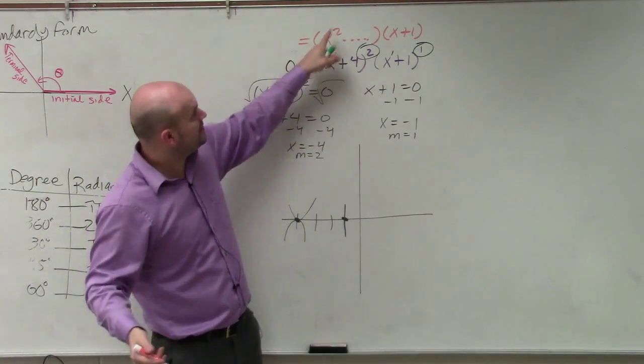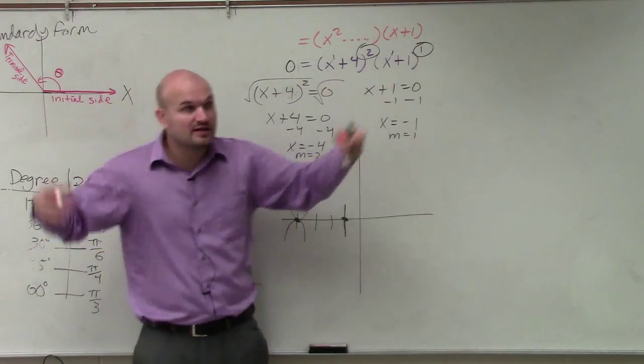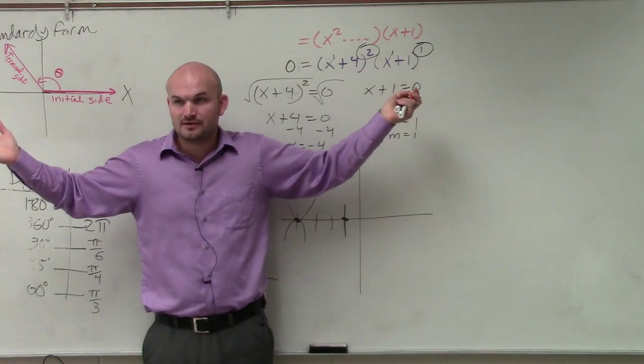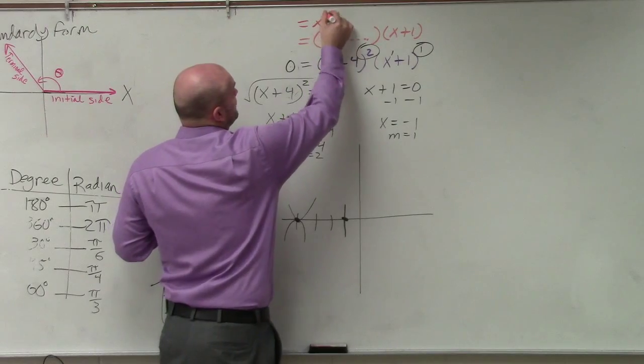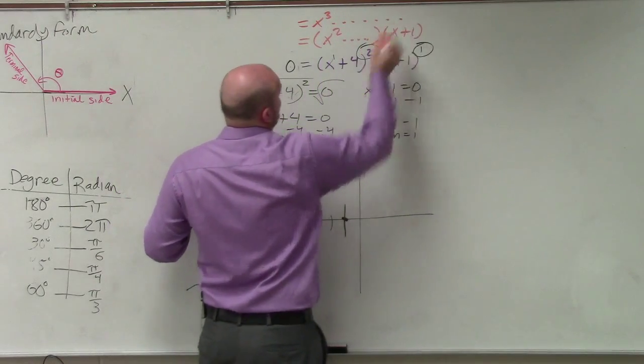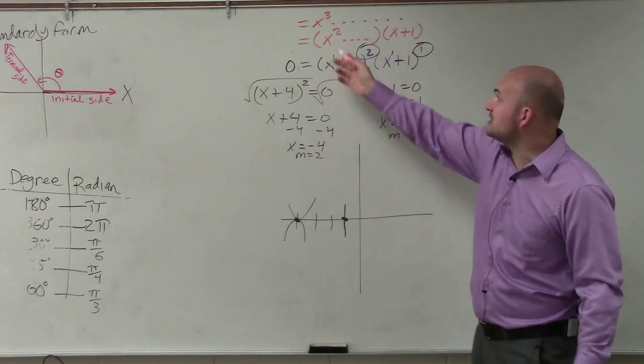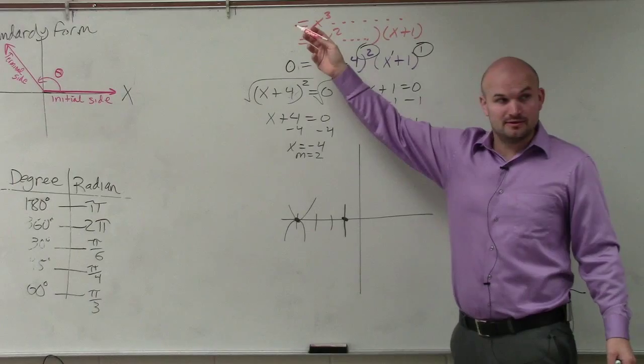Well, what happens when you multiply x squared times x? You get what? You get x cubed, right? Is there going to be any other multiplication in there that's going to give you something higher than x cubed? No. So therefore, you can reason that the highest degree, or power, of the product of x plus 4 squared times x plus 1 is x cubed, correct?